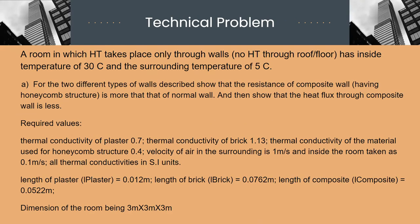Given is a textbook statement of the actual problem. In the part A, we have to show that the resistance of composite wall is more than that of normal wall. And then we have to show that the heat flux to composite wall is less. Required values for this question are given below, which consists of thermal conductivities, velocities, lengths of plaster, brick and composites.